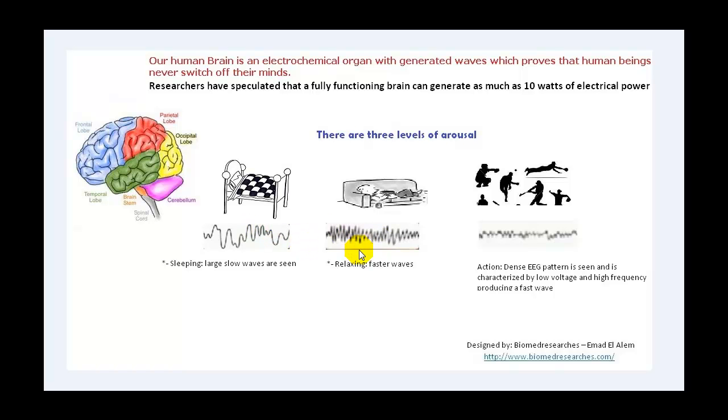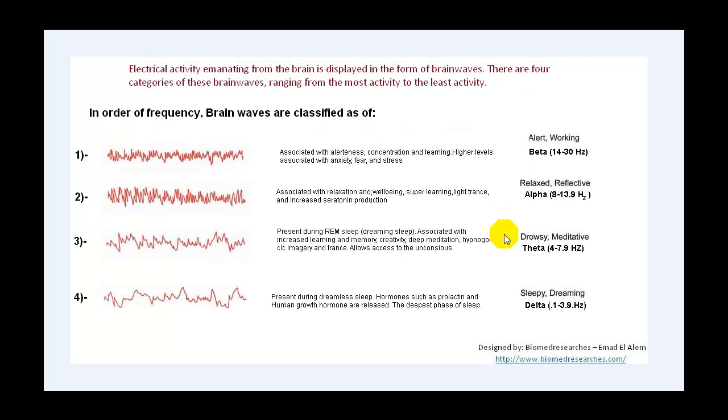During the sleeping, we will have low frequency and high amplitude. During the relaxing, the waves become faster as you can notice here. And during the action, the waves become very fast, which means that the frequency is becoming high and amplitude is becoming low. Electrical activity emanating from the brain is displayed in the form of brain waves. There are four categories of these brain waves ranging from the most activity to the least activity. So in order of frequency, brain waves can be classified as the following.